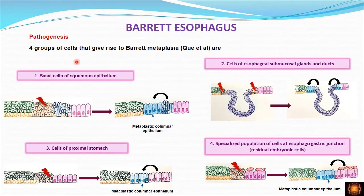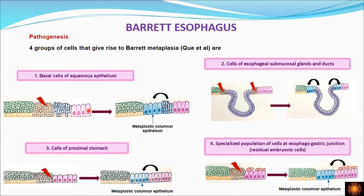Four groups of cells have been described as giving rise to Barrett's metaplasia, as described by Qu et al. The first group is the basal cells of the squamous epithelium. When there is an injury stimulus, these basal cells first differentiate into transitional-type cells, and these transitional cells later differentiate into metaplastic columnar epithelium.